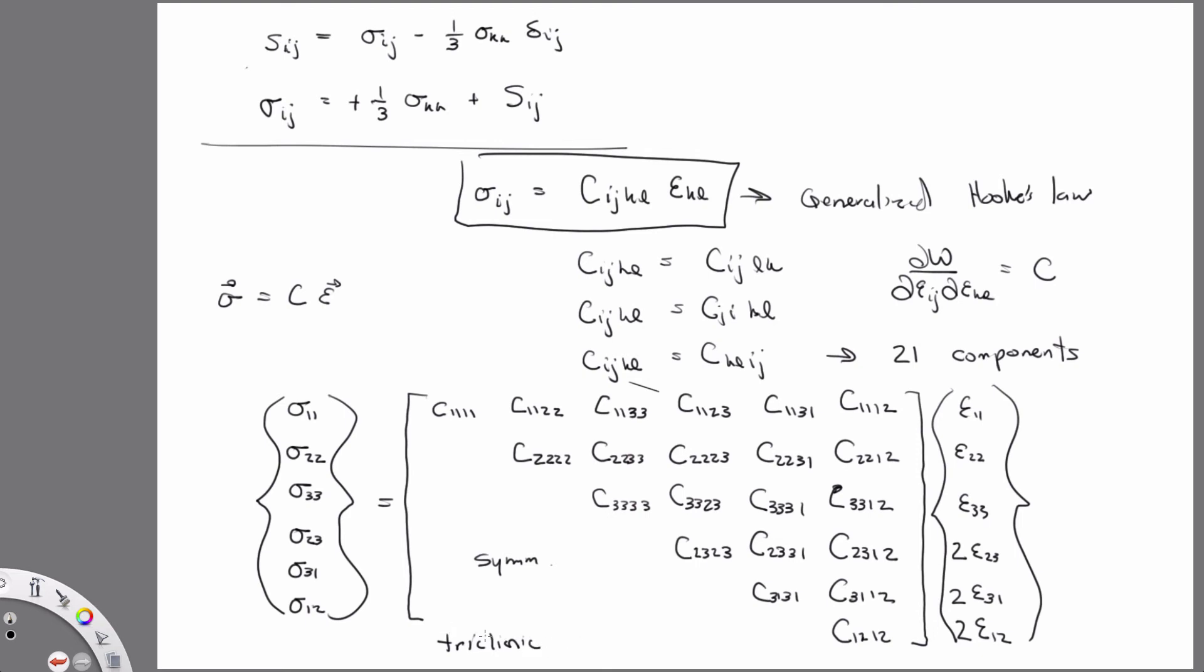And thankfully there aren't too many of those because I wouldn't want to go to the lab and do 21 independent experiments to populate that type of material. So this type of material has no planes of symmetry. But the reality is most materials have at least one plane of symmetry. And if it has at least one plane of symmetry, then we can reduce the number of material properties, material constants you need to describe the relationship between stress and strain.